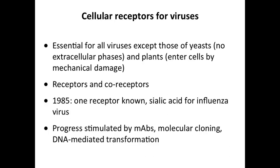For virtually all viruses we discuss, cellular receptors are required to initiate infection. Exceptions include some yeast viruses that lack extracellular phases and pass directly as cells divide, and plant viruses, which generally enter by mechanical damage or via insects. But we're focusing mainly on animal and mammalian viruses and bacteriophages that bind receptors. There are what we call receptors and co-receptors — really an accident of discovery, where the first protein needed is called a receptor and the second a co-receptor.